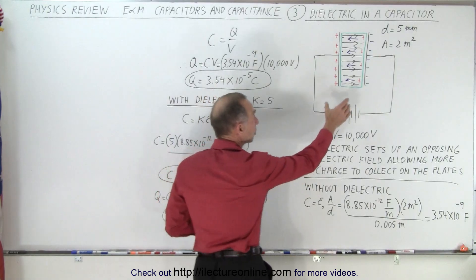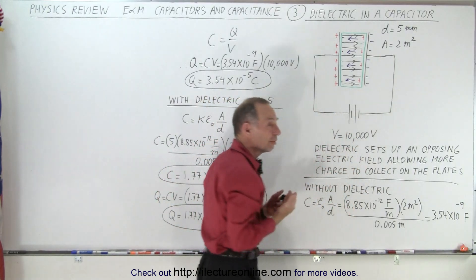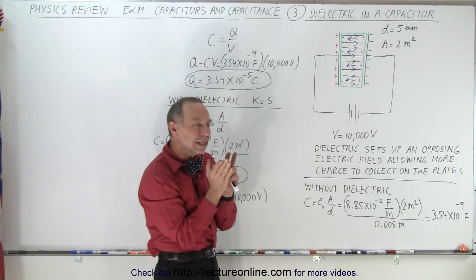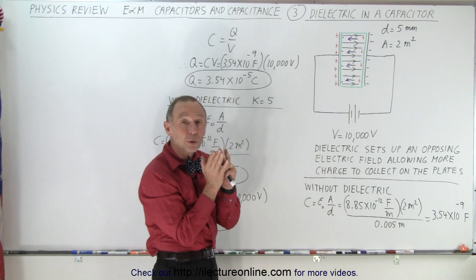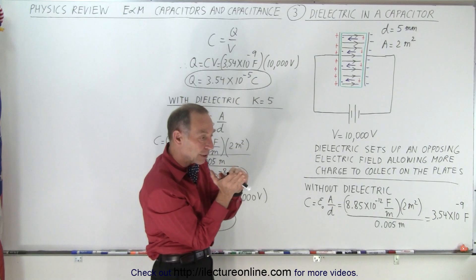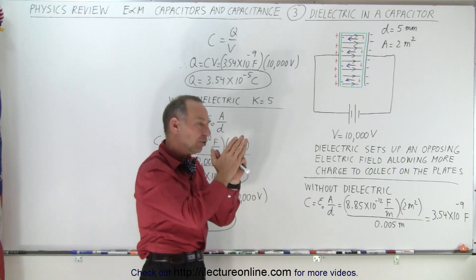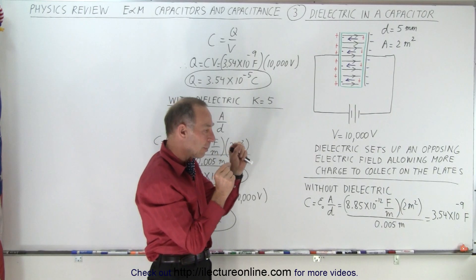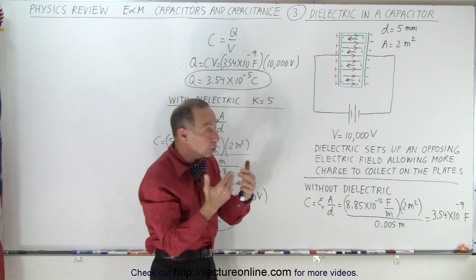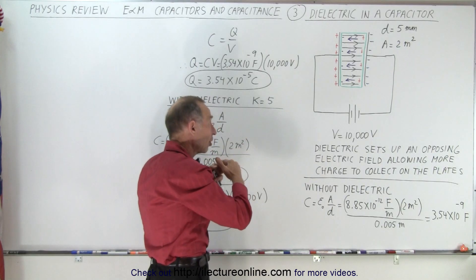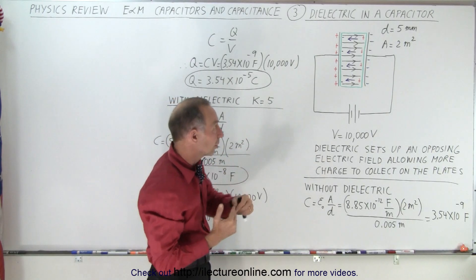A dielectric is an insulating material that does not conduct electricity very well, but it does allow the molecules or atoms inside the dielectric to turn some angular distance in such a way that the molecules, which tend to be polar, are negative charge on one side and positive charge on the other side.